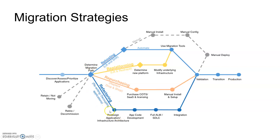If you have selected refactoring as your migration path, you have to redesign your complete application architecture, then build the code according to your changes. You have to perform application lifecycle management or software development lifecycle management completely, integrate the code, then go with validation, transition, and production. Note that refactoring is the most costly approach, so be careful when you decide to refactor. Also, try to perform some piloting for any of the strategies.